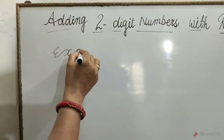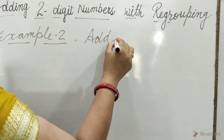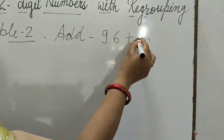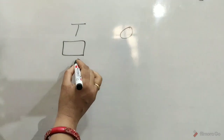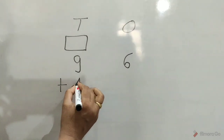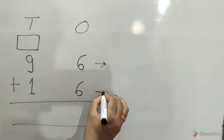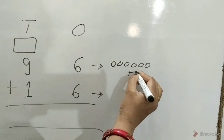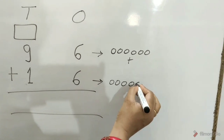Example 2: add 96 plus 16. Write here tens and ones and draw a carry house. Write 9 tens, 6 ones plus 1 ten, 6 ones. Children, for make it easy, we can draw 6 circles: 1, 2, 3, 4, 5, 6, plus 6 circles in front of 6: 1, 2, 3, 4, 5, 6.